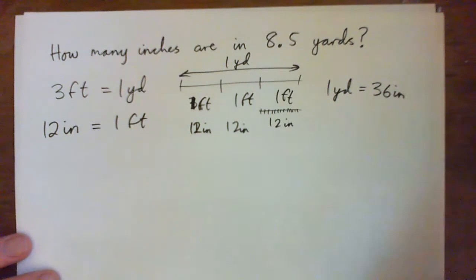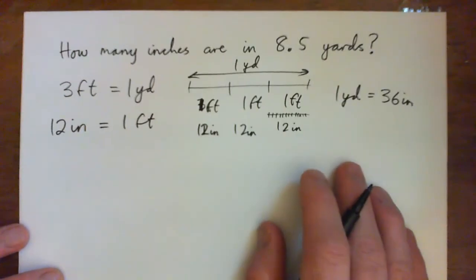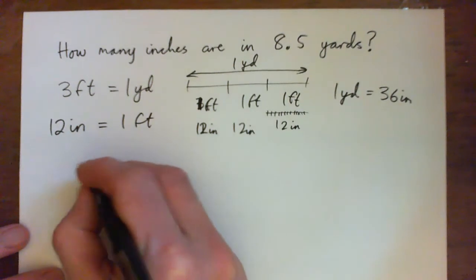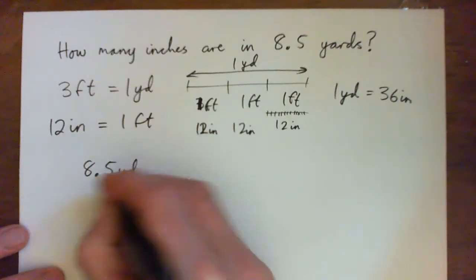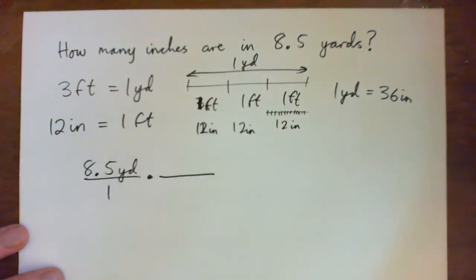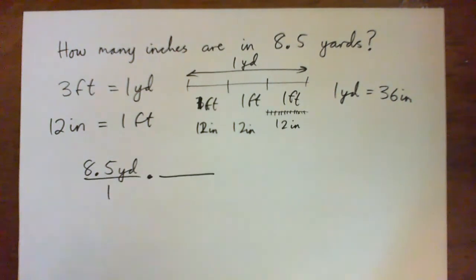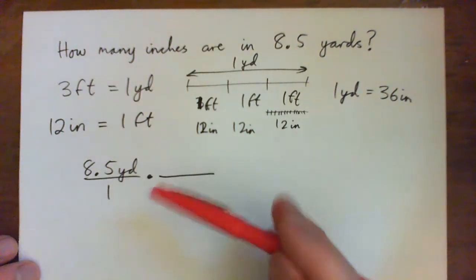I'm just going to run through the unit analysis thing because it's kind of useful for chemistry and lots of different situations. So I'm going to write 8.5 yards over 1, and I'm going to multiply by these unit fraction things here to help me get the answer.